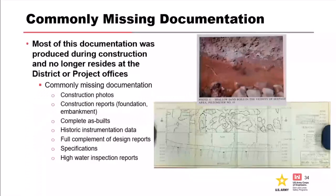Searching for files — one of my favorite things. Most of the documentation was produced during construction and no longer resides at the home office. In the Corps of Engineers, we have requirements to transfer civil works files to the National Archives and records holding. So oftentimes we don't have all the documentation in house and have to dig deeper. Commonly missing documentation: construction photos and reports, complete as-builts — we can find ten copies of the same construction drawings, but what I care about is what was stamped as-built — and historic instrumentation data.